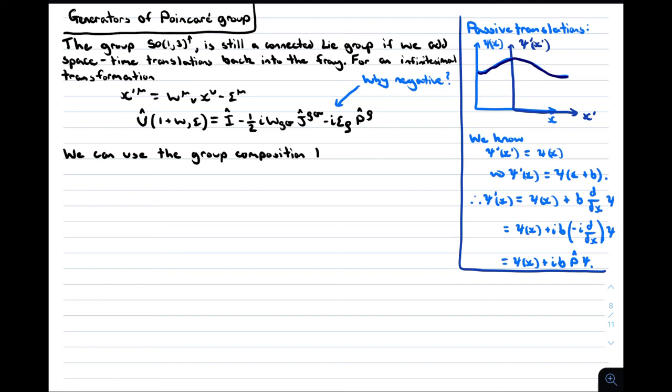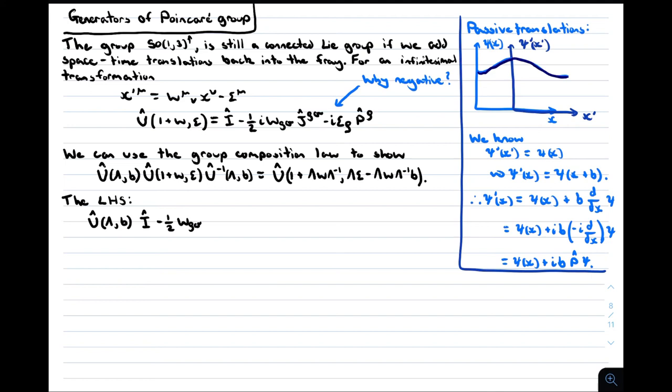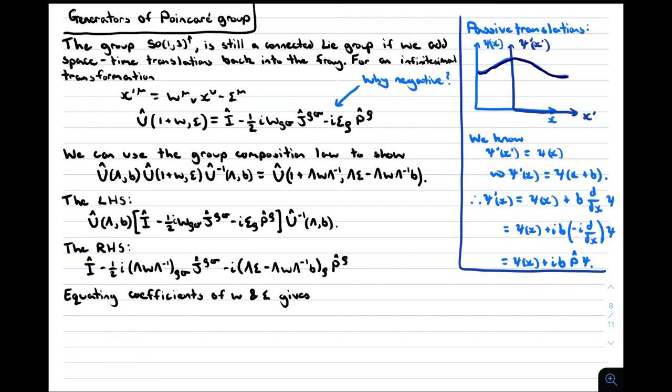We can then use the group composition law to sandwich an infinitesimal transformation between two normal transformations, and obtain two different relations for this. Since ω and ε are both small, the terms on the right hand side are also small, so we can expand both sides about the identity. The algebra here gets a little messy, but it's not too difficult, and it's good practice of using tensor notation if you take the time to work it through. We equate coefficients of ω and ε to find two nice relations satisfied by the generators. The second one here is easy to interpret. It just tells us that the four momentum generators transform as a four vector, as we would expect.